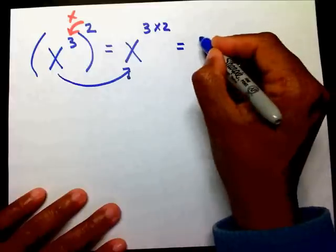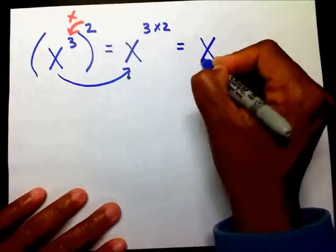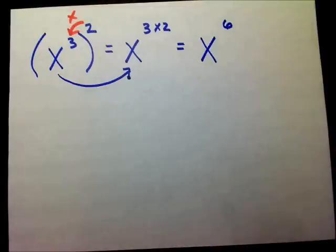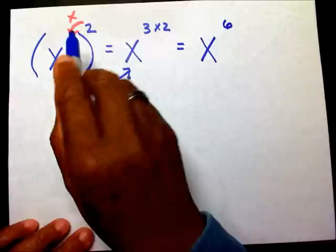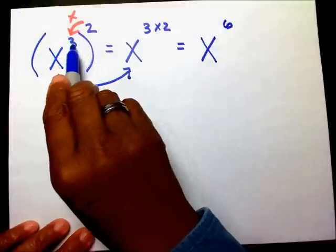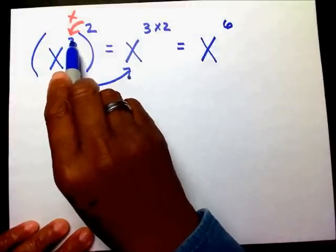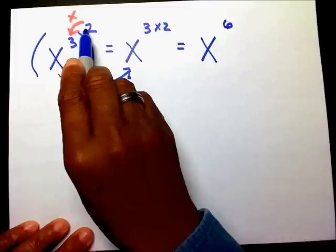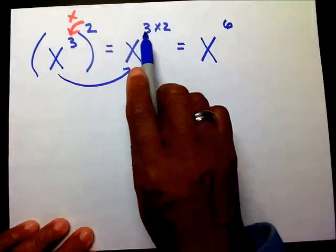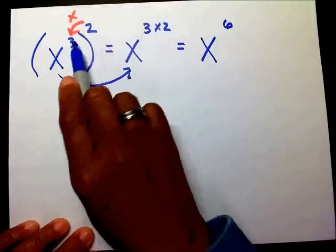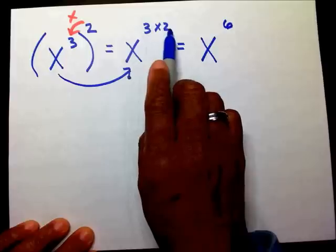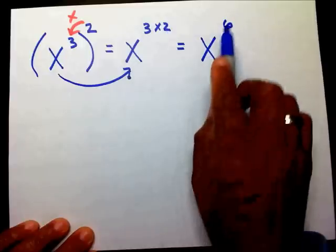What is three times two? Bring your x over — three times two is six. So again, if I have an exponent on the inside and an exponent on the outside, I'm going to multiply my exponents: three times two, and that's going to give me six — x to the sixth power.